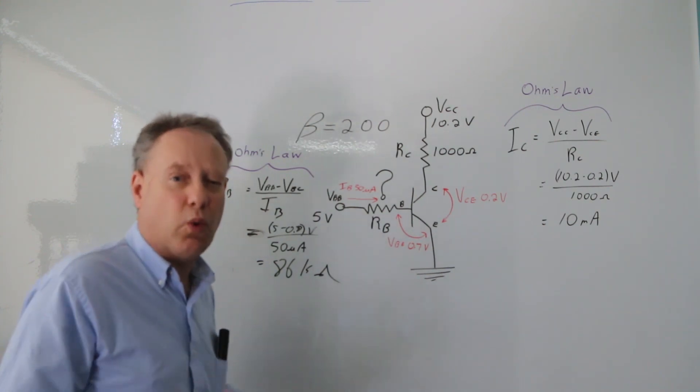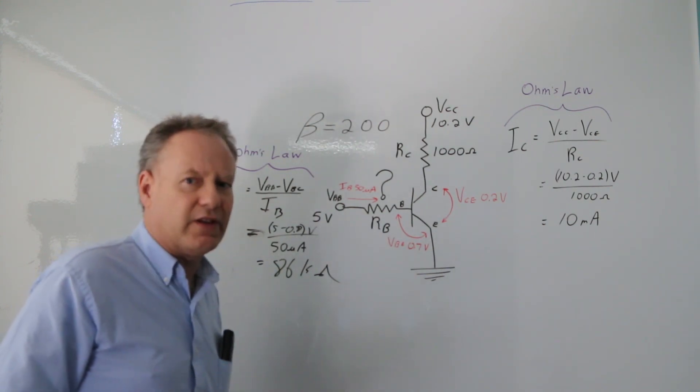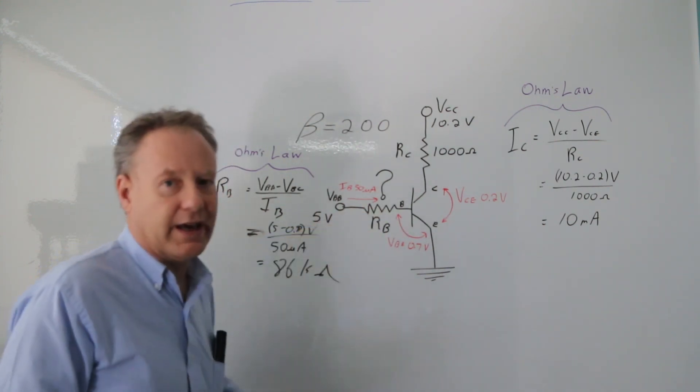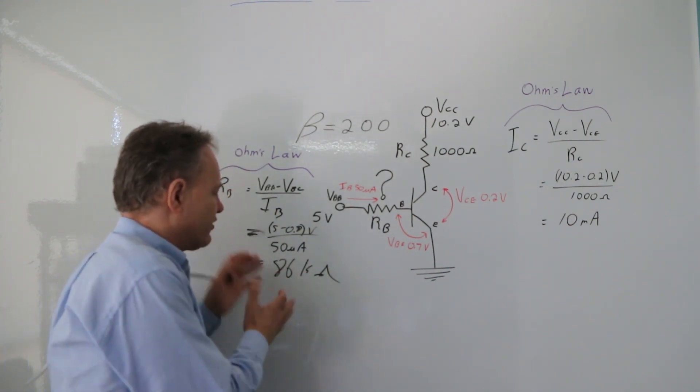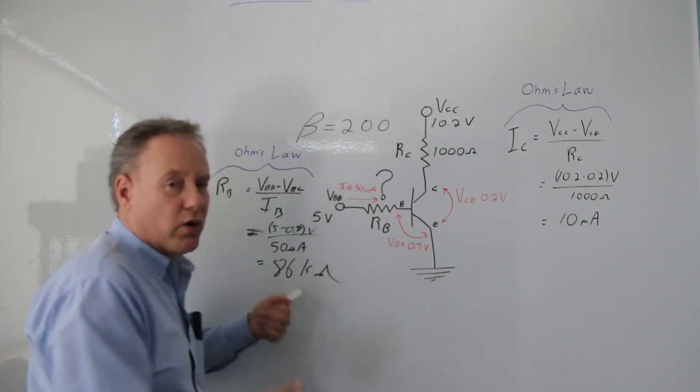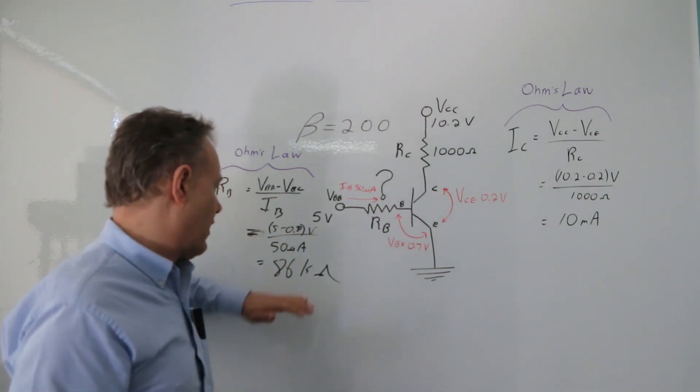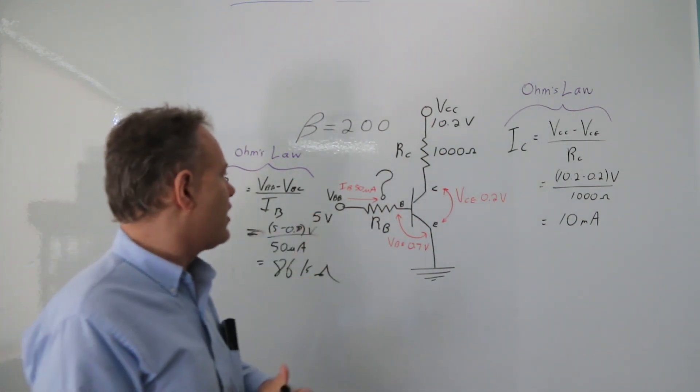Or if you wanted to go down to a 40k, that's also fine. It's more than twice the current, which is perfectly fine. As long as you don't put like a 1k in there, you're good. So stick to about half of this, or somewhere between half and a quarter to three-quarters of that, and you're good.